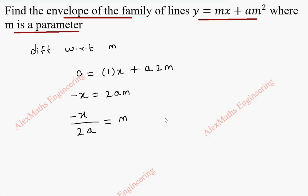We got m, and we have to substitute this m in the curve, so that in the curve we can eliminate the given parameter. So on substitution, we get y equal to, in place of m, minus x by 2a, and we have x plus am².